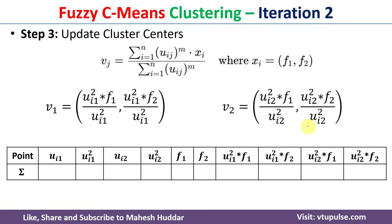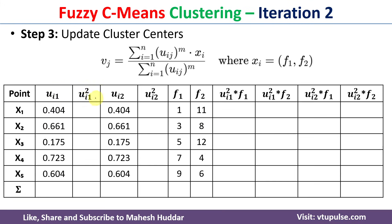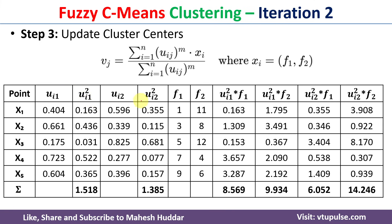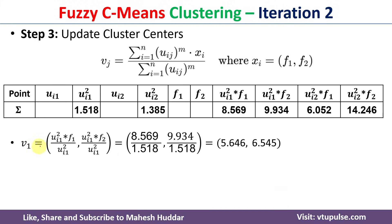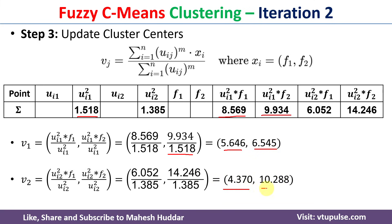After computing the full membership matrix for iteration 2, we update the cluster centers. Squaring the ui1 values gives ui1², then we compute the required sums: v1 = (8.567/1.518, 9.934/1.518) = (5.646, 6.545) and v2 = (4.370, 10.288). This concludes the second iteration.